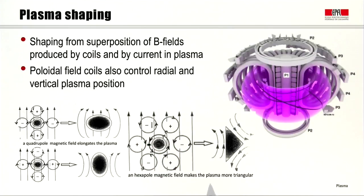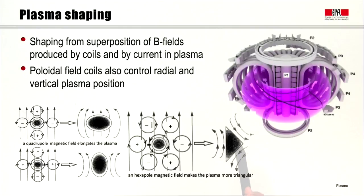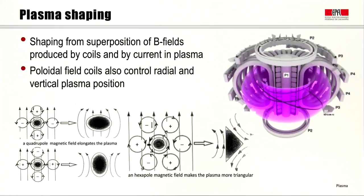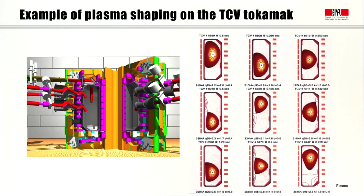If we have a hexapole magnetic field, then we have a plasma that tends to have a more triangular cross-section. Taking this polarity of the fields produced by the outer poloidal field coils, we have a plasma that is triangular toward the right. Plasma shaping is very important because it is one of the possible methods to control instabilities and to optimize the performance of a fusion reactor.